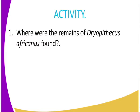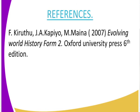Now class, can we get to look at this activity? This is an activity to see how best we have understood the subtopic of Diopithecus africanus, also known as Proconsul. State where the first remains of Diopithecus africanus were found, and name the person who discovered Diopithecus africanus. For our reference, use Evolving World, History and Government, Form 2, Oxford University Press, 6th edition.